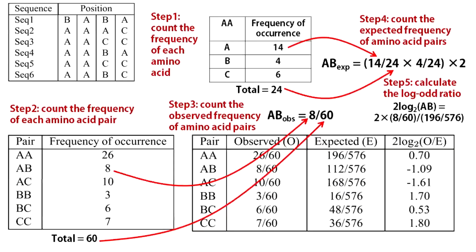The final step is to calculate the log-odds ratio. You take a ratio of the observed and the expected frequencies of occurrences and calculate the logarithm of base 2. This number represents how likely an A to B substitution is, considering the expected background substitutions. We do not use the exact logarithm value; rather we use its rounded-off value. This is how we generate our BLOSUM matrix.